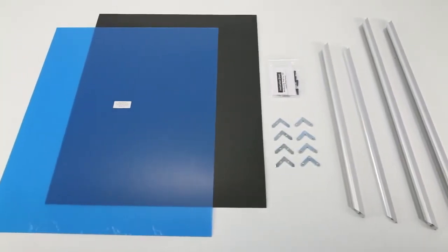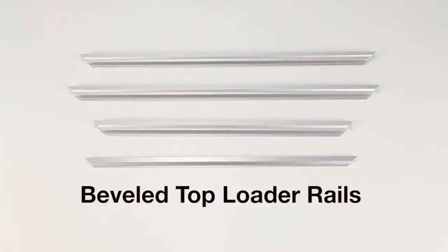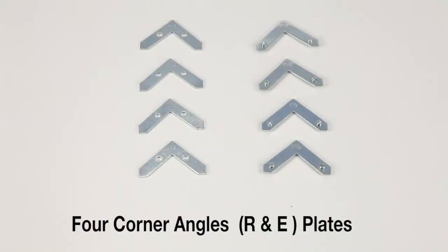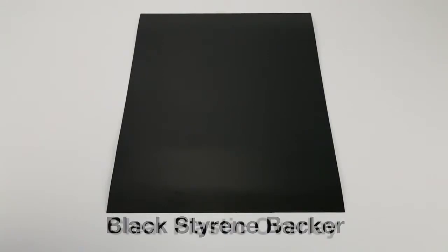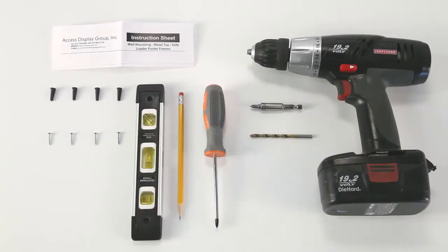Once you've taken all the materials out, there should be four rails, four corner joining angles consisting of eight pieces, a backing board, a clear plastic overlay, and mounting hardware.